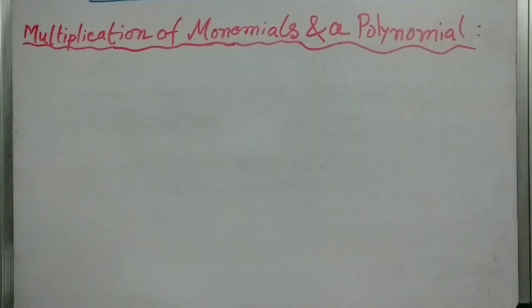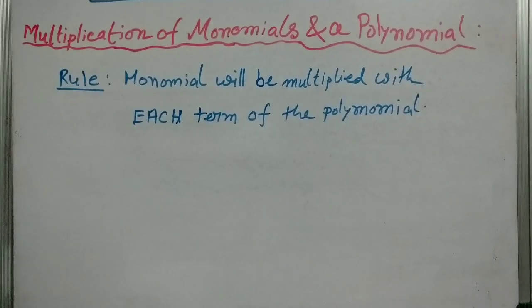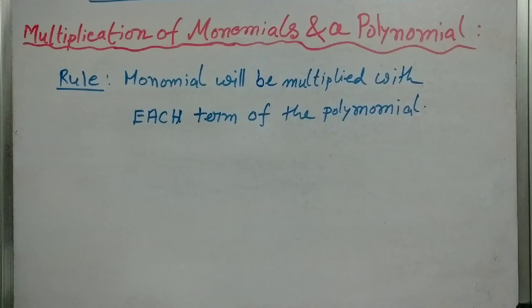Next we will go to multiplication of a monomial and a polynomial. Here we have to follow a simple rule: the monomial will be multiplied with each term of the polynomial.